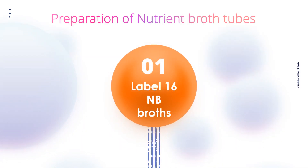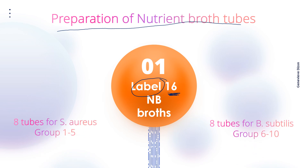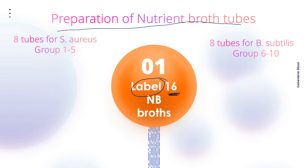Let's now proceed with the step-by-step procedure. The very first step is to prepare the different nutrient broths given to you by labeling them. Ideally, 60 nutrient broths will be given per group, but for this upcoming experiment, only eight tubes will be given per group, because groups 1 to 5 will be processing S. aureus, and groups 6 to 10 will be processing Bacillus subtilis.